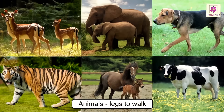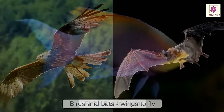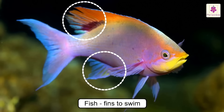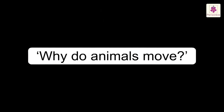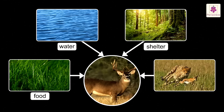Just like human beings, most animals walk on their legs. Birds and bats use their wings to fly. Fish use their fins to swim. Animals move in search of food, water, shelter and to protect themselves from enemies and other dangers.